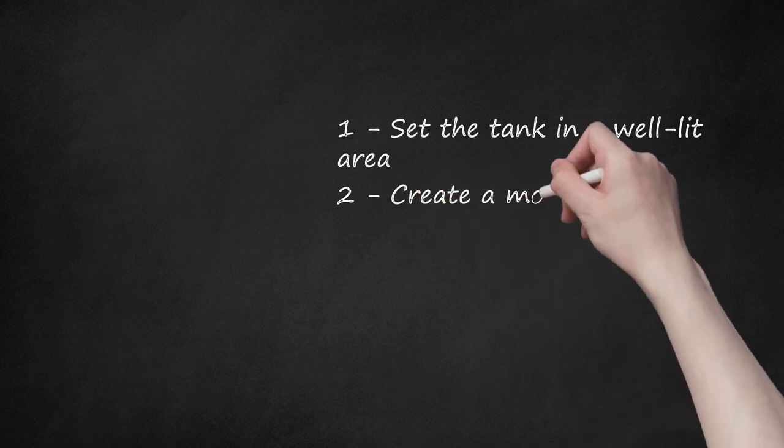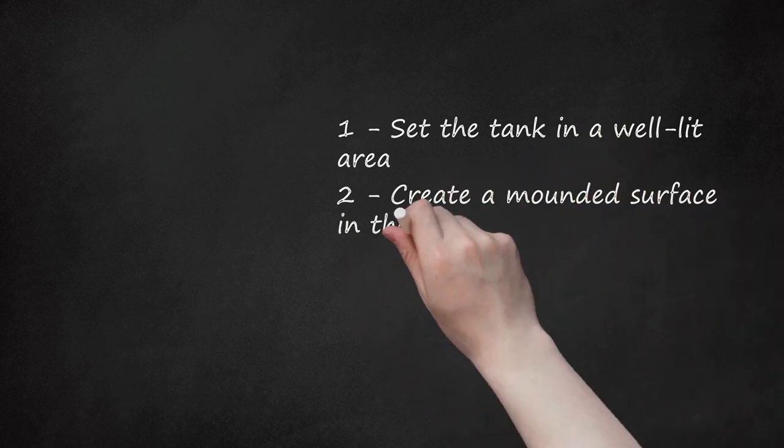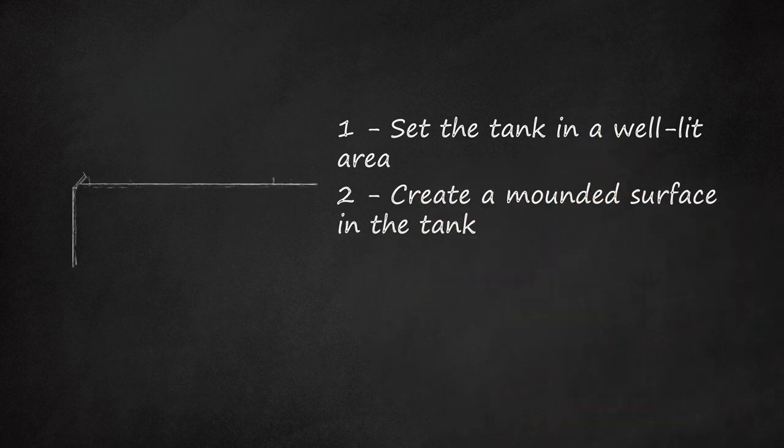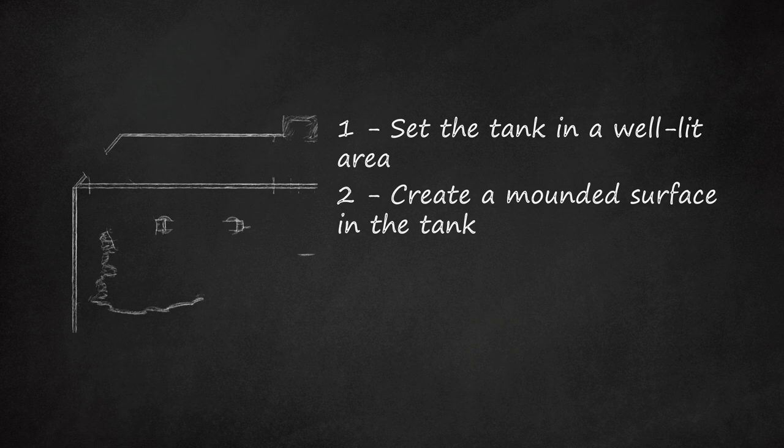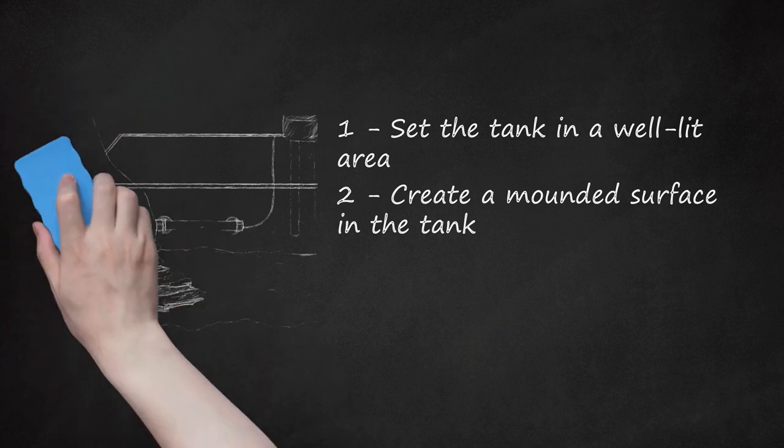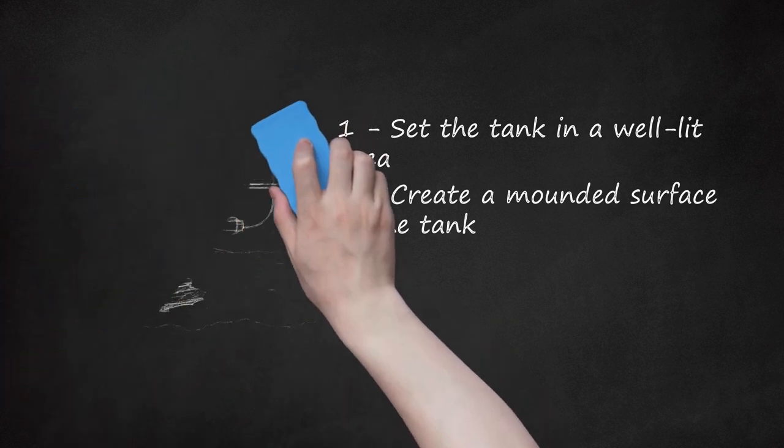Step 2 - Create a mounded surface in the tank. Though red-clawed crabs are aquatic, they do breathe air. This means they'll need high areas above the waterline that they can reach by walking or climbing. You can create this with the decor items or add a ramp for this specific purpose.